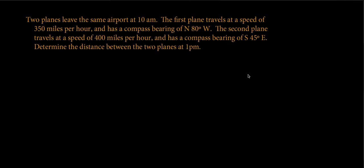It says that two planes leave the same airport at 10 a.m. The first plane travels at a speed of 350 miles per hour and has a compass bearing of north 80 degrees west. The second plane travels at a speed of 400 miles per hour and has a compass bearing of south 45 degrees east.